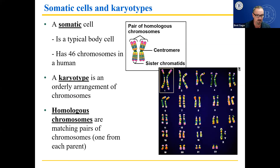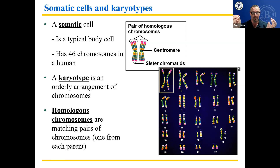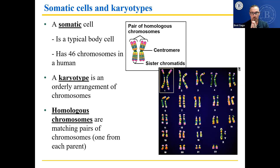Homologous chromosomes are matching pairs of chromosomes, one from each parent. Each of the homologues at one point is going to have a sister attached to it. So what we're going to do — a little preview — is we're going to separate the homologous chromosomes first, and then we'll separate those two sister chromatids in the same way you could separate a double burger into two single hamburgers.